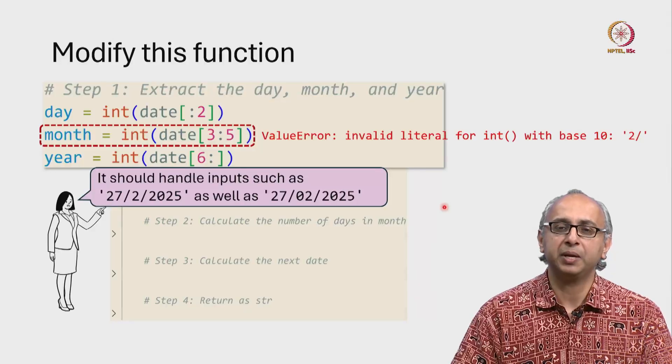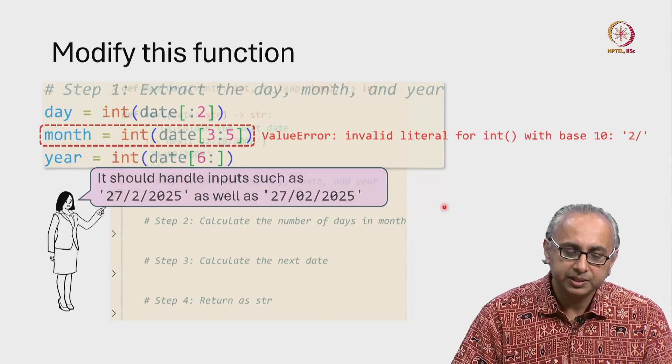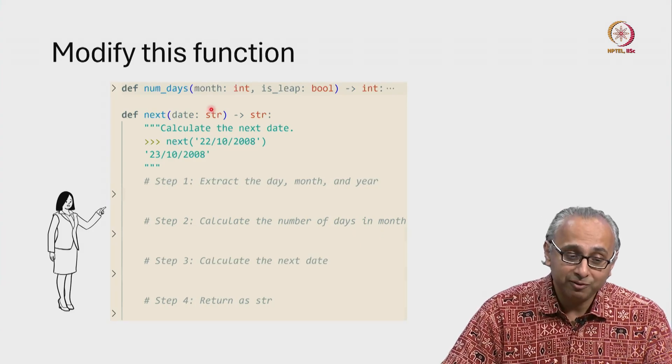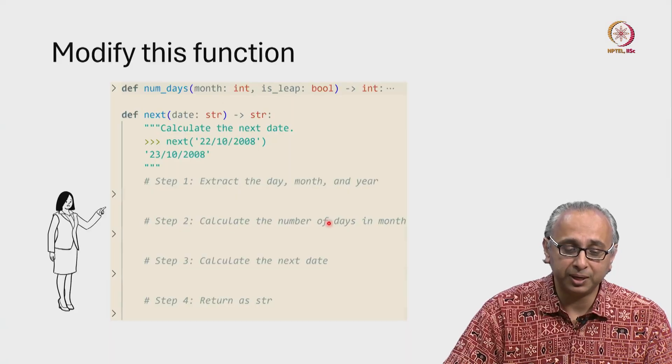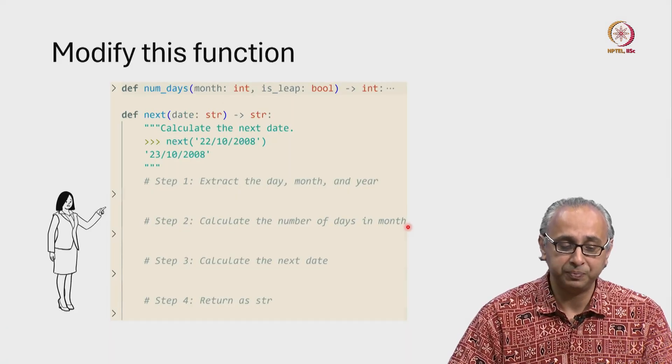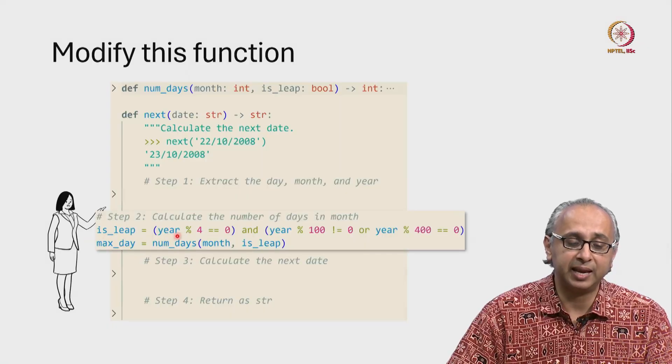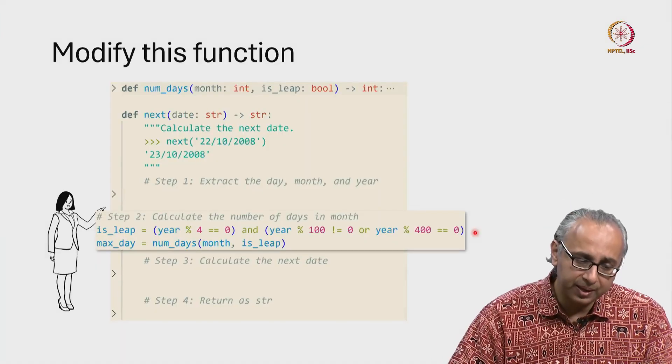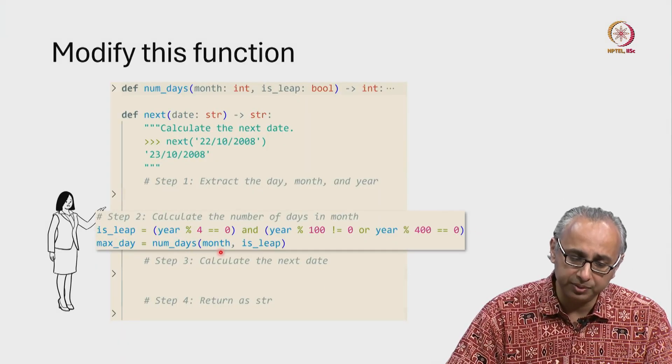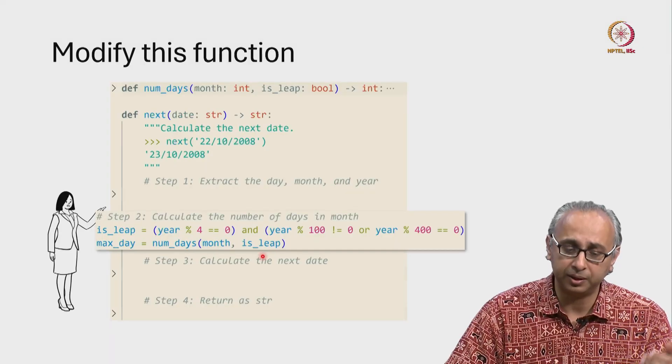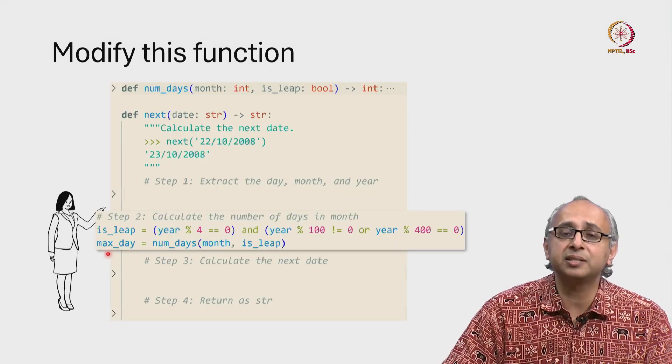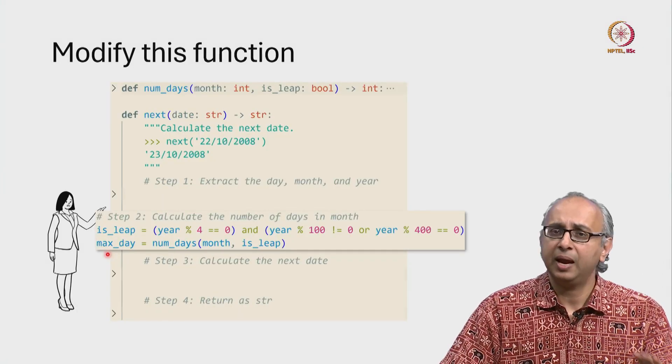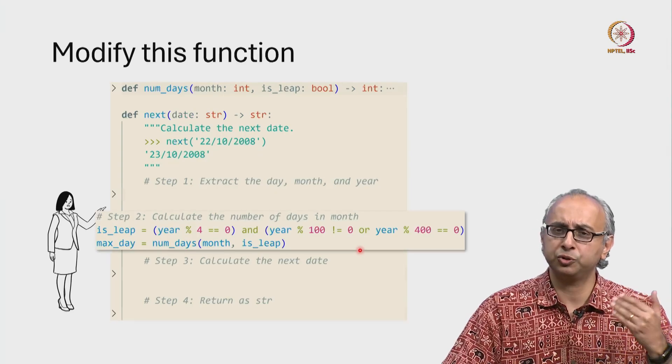So that is step 1. Let's continue reading the rest of the code. Step 2 says calculate the number of days in month. Well, we have a helper function for doing that. So presumably this uses that helper function, and indeed when we zoom in we see that first it calculates whether the given year is a leap year or not. We saw this logic earlier. And then it calls the helper function with the given month and whether or not this is a leap year according to this calculation. And then it calculates the maximum number of days in that particular month. And our client is fine with this code. She has no problems here.